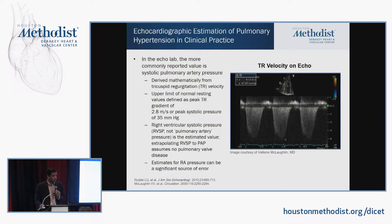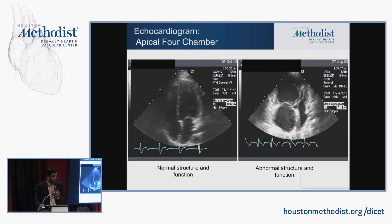In the echo lab, to make a diagnosis, look at the TR jet. You really need an adequate TR jet to calculate PASP — you look at the velocity, square it, and multiply by four. Anything over 40, you should be considering pulmonary hypertension in these patients.